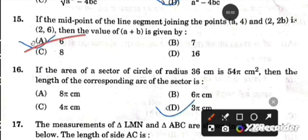Next question: If the area of the sector of a circle of radius 36 centimeters is 54π centimeters squared, then the length of the corresponding arc of the sector is 3π centimeters.